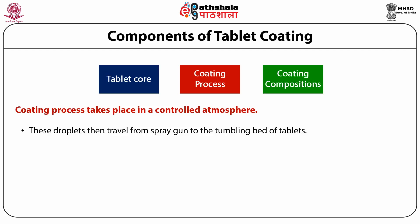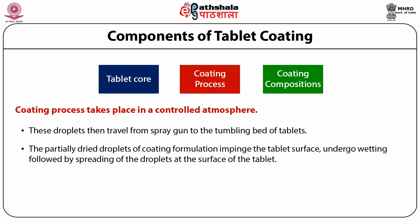These droplets then travel from the spray gun to the tumbling bed of tablets. Simultaneously, heated air — called drying air or inlet air — is introduced into the coating pan, either with the liquid spray or through the bed of tablets. This causes partial drying of droplets due to contact between atomized droplets and drying air, resulting in heat and mass transfer. The partially dried droplets of coating formulation impinge the tablet surface, undergo wetting, followed by spreading of the droplets at the surface of the tablet.